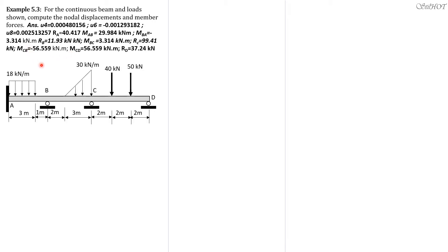Let's have example 3, problem 5.3 from your handouts for the continuous beam and load shown. Compute the nodal displacements and member forces. So we have here the beam. This is indeterminate — there are three degrees of freedom.